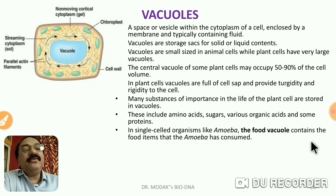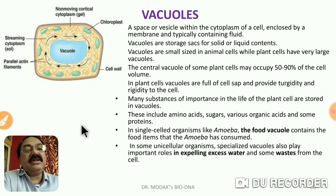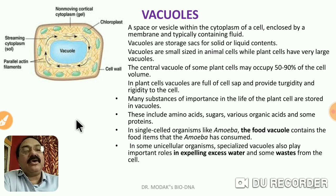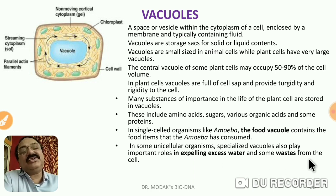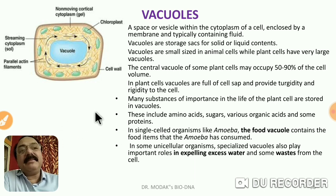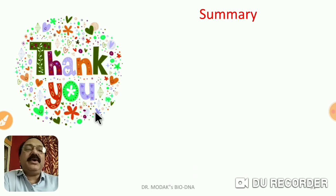Many substances of importance — organic substances like proteins, alkaloids, flavonoids, starch, and pigments — are stored in the vacuole. In single-celled organisms like amoeba, the food vacuole contains food items the amoeba has consumed. In organisms like paramecium, vacuoles are called contractile vacuoles; they are used to expel excess water and therefore act as excretory organs. Contractile vacuoles in paramecium help in expelling excess water as well as waste.